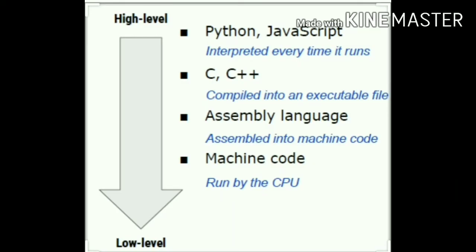Programming Languages are categorized into the following types: first, Low Level Language; second, High Level Language. Low Level Languages are easily understood by the computer but are more difficult for the programmer to understand and write. These are of two types: Machine Language and Assembly Language.